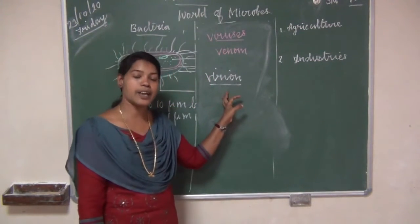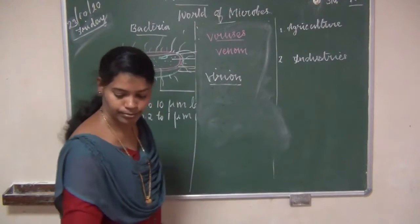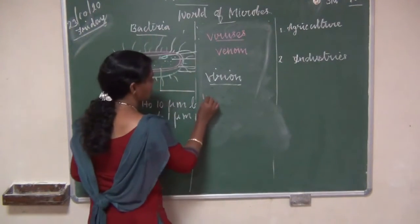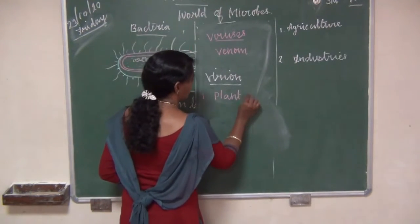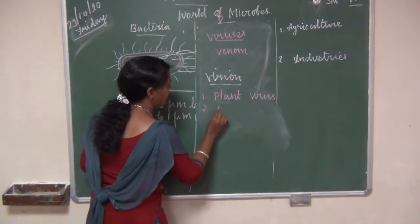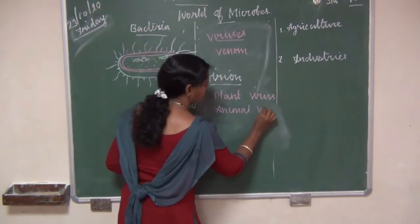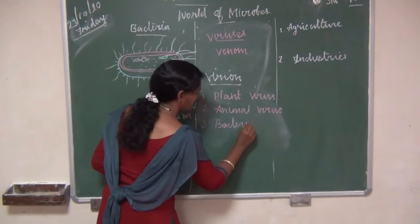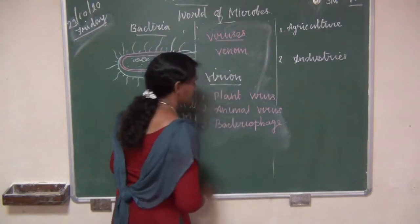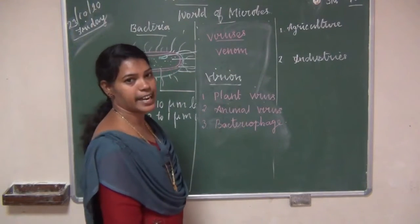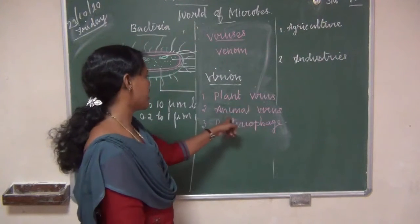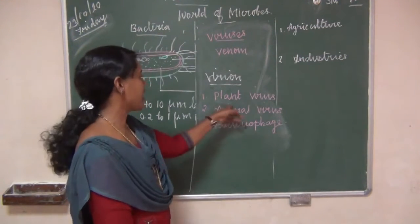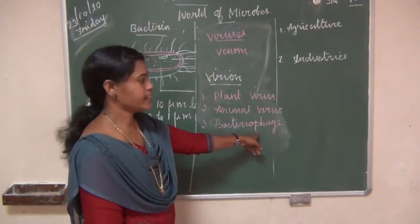There are three types of viruses: plant virus, animal virus, and bacteriophage. Let us see them one by one.